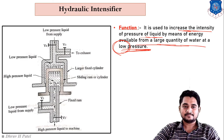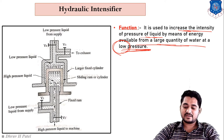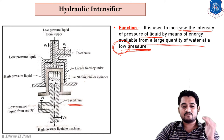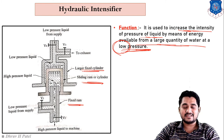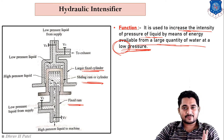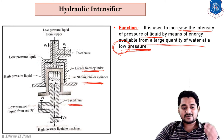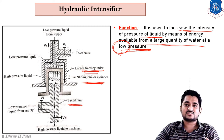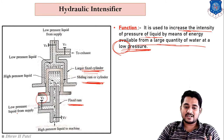In the construction of the hydraulic intensifier, one fixed ram is at the bottom. Above the fixed ram, one sliding ram is mounted. Above the sliding ram, one large fixed cylinder is placed. So there are three cylinders: a small fixed ram at the bottom, a sliding ram in the middle, and a large fixed cylinder at the top.